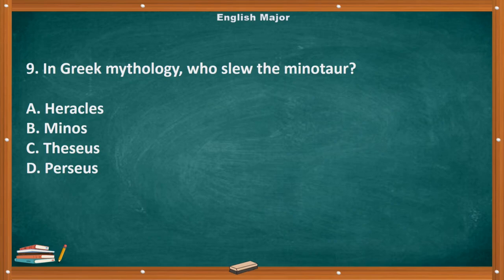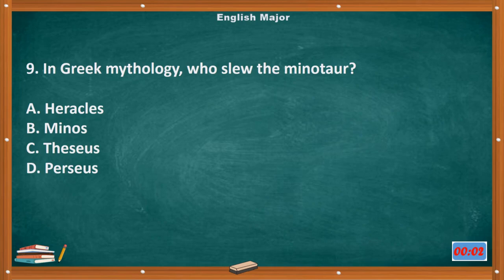Question number 9. In Greek mythology, who slew the Minotaur? A. Heracles. B. Minos. C. Theseus. D. Perseus. The correct answer is letter C, Theseus.